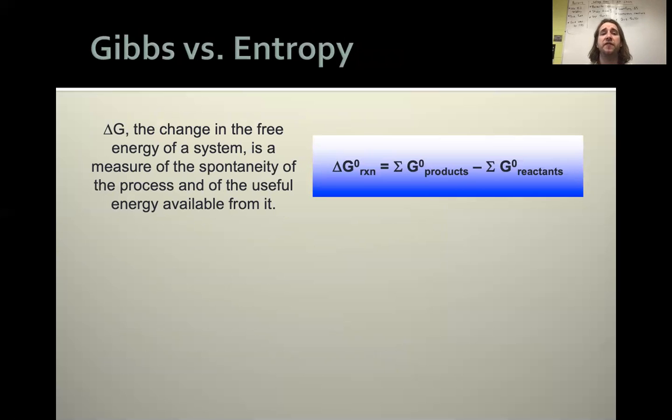Delta G is the change in the free energy of the system as a measure of the spontaneity of our process and the useful energy available from the change. But it is still a state function. This is still on your equation sheet. The change of delta G, so delta G for your reaction is still just products minus reactants to figure out how much the change is going to be. That then comes out to be negative, spontaneous, yay, which is great.